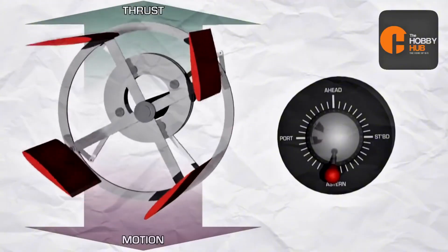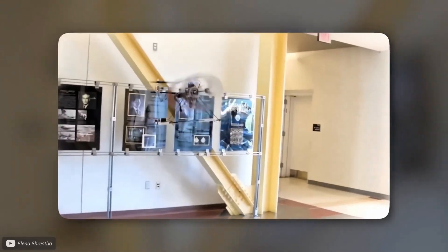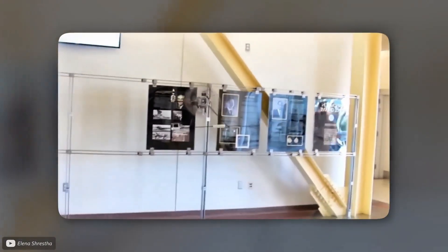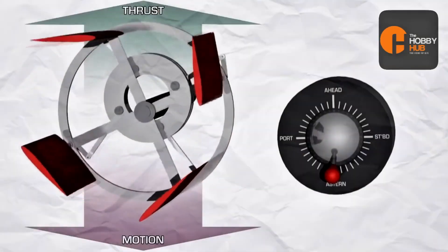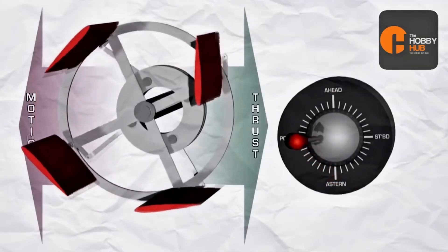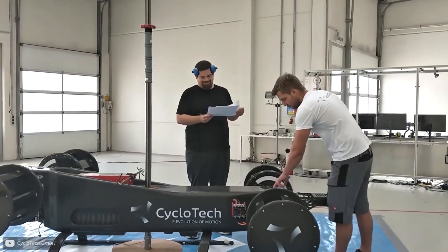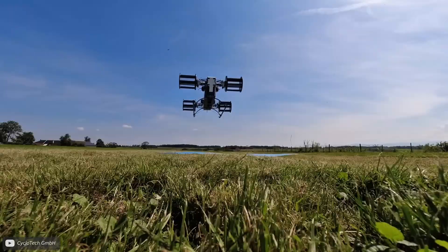Hobbyists and researchers have built many cyclorotor drones, too, and even NASA has studied them for future missions. In the 1990s, one wild concept proposed using cycloidal thrusters on a giant cargo blimp. Picture a 200-ton airship that takes off and lands like a helicopter, thanks to five huge cycloprops, no airport required.